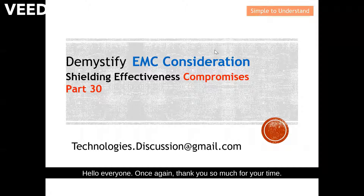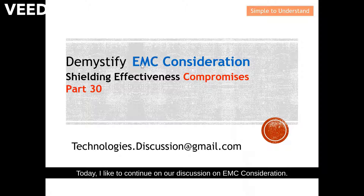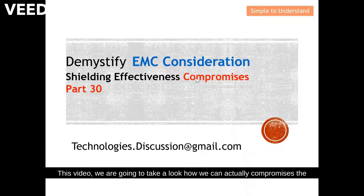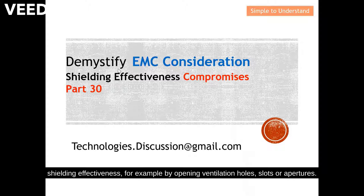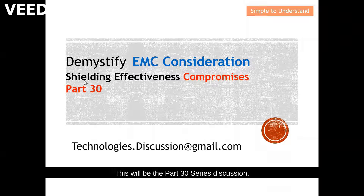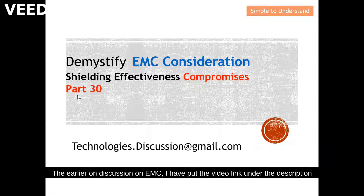Hello everyone, thank you for your time today. I'd like to continue our discussion on EMC. Our topic for today is shielding effectiveness compromise. In this video, we are going to look at how we can compromise the shielding effectiveness — for example, by opening ventilation holes, slots, or apertures. This will be part of the series 30 discussion. Earlier discussions on EMC have been linked in the description.